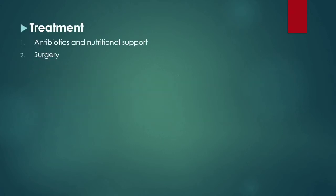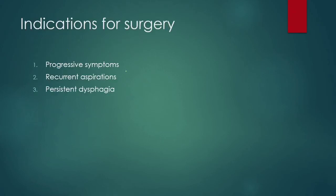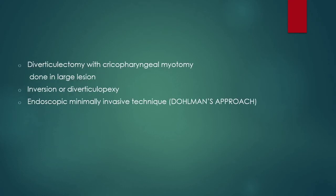How will you treat Zenker's diverticulum? Antibiotics and nutritional support at the early stage, and we can do surgery. What are the indications for surgery? Progressive symptoms, recurrent aspiration, and persistent dysphagia are the indications. We can do diverticulectomy with cricopharyngeal myotomy, usually done for large lesions. We can also do inversion or diverticulopexy.